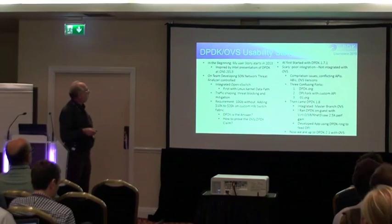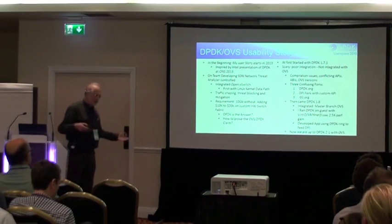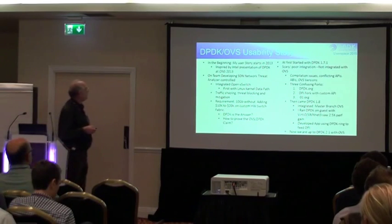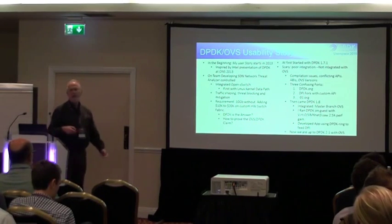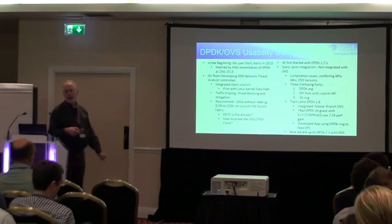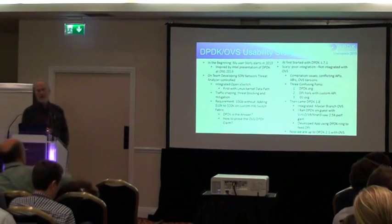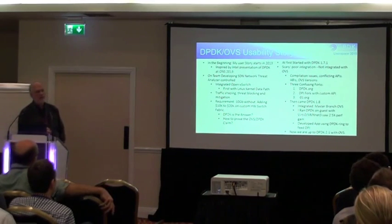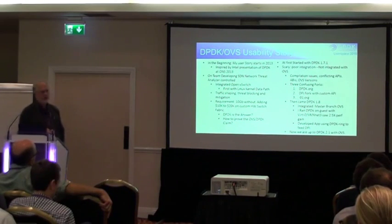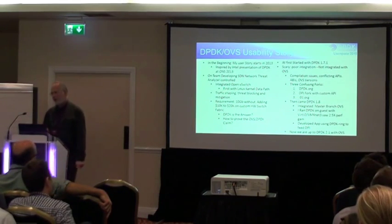The user story begins with the speaker himself. In 2013 at the ONS conference, he saw an Intel DPDK presentation and thought it was blindingly fast. He was working at the time on security applications, where there was talk about very expensive front ends with expensive silicon and FPGAs to capture packets extremely fast — maybe at 10 gig and 100 gig.